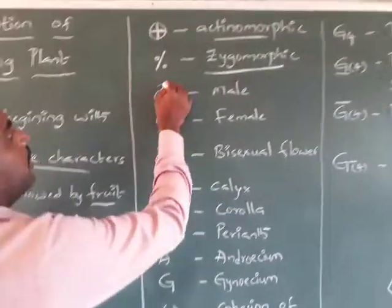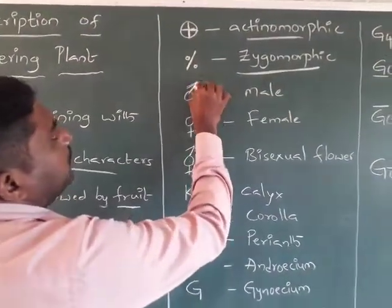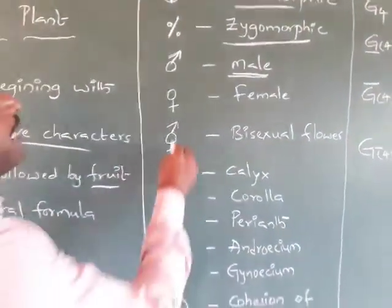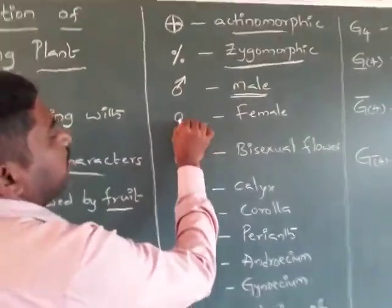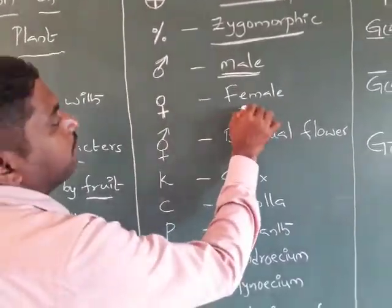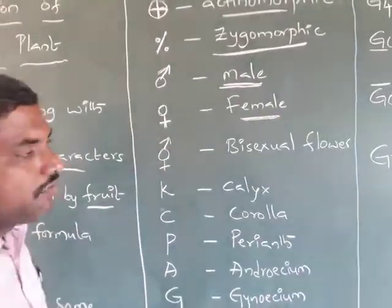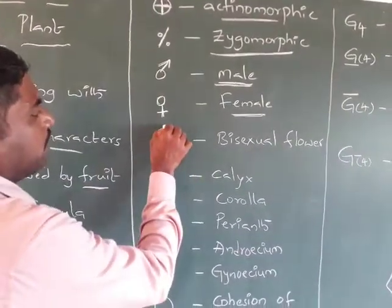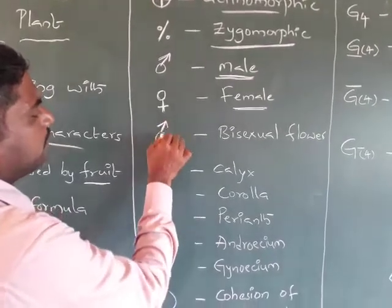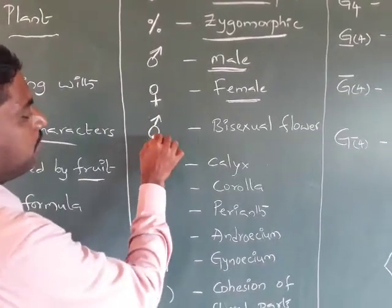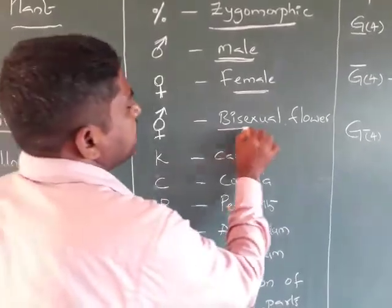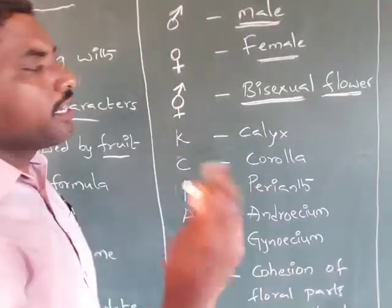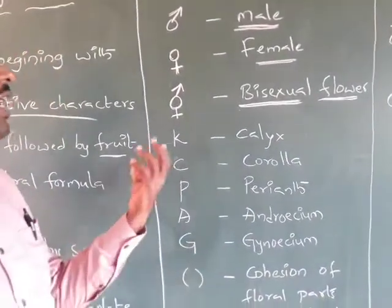An arrow mark indicates the male flower, and a plus symbol indicates the female flower or female sex. A flower which has both — indicated by the arrow mark and plus mark together — is called a bisexual flower, which means the flower contains both the androecium and gynoecium.